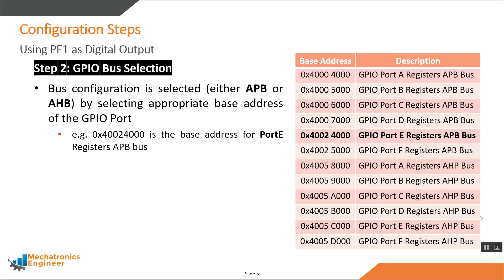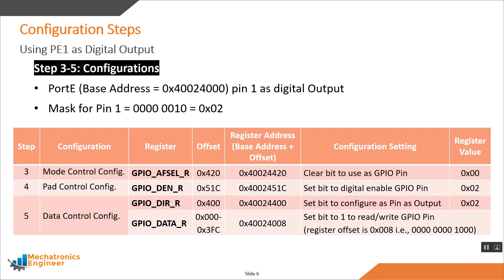Each GPIO port has an associated set of registers used for its configuration. Some of these registers are shown in this table — let's discuss them one by one in the context of our LED interfacing problem. All these configuration registers have the same offset value from the port base address, meaning we can calculate their address by simply adding the base address of the port to the respective offset value.